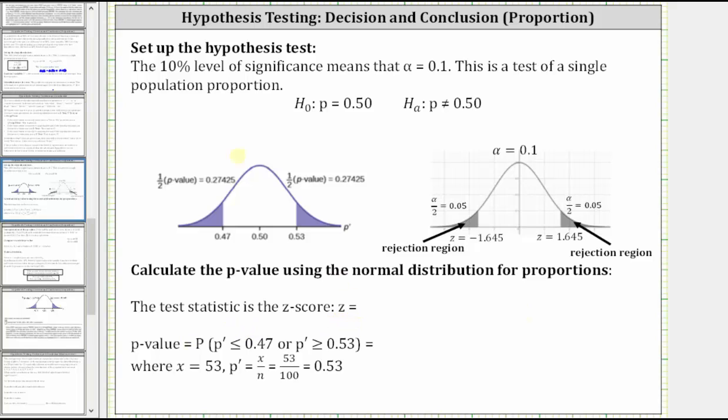And then looking at the graph here on the left, notice how the population proportion is right in the middle. The sample proportion of 0.53 is to the right. Because we have a two-tailed test though, to find the value on the left, we have to subtract 0.03 from 0.50, which does give us a 0.47 on the left. And therefore the combined area on the left and right is equal to the P value. And each area is equal to half of the P value.